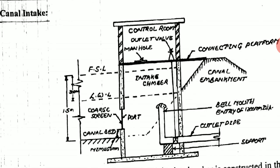This controls the entry of water into the outlet pipe, from where it is taken to the treatment plant. You can see the depth of the water column is around 1.2 meters.